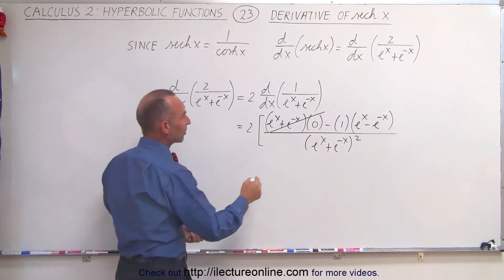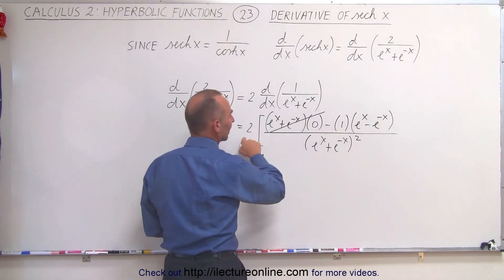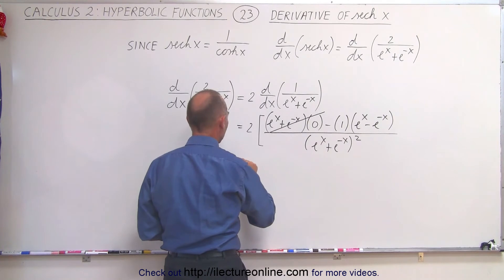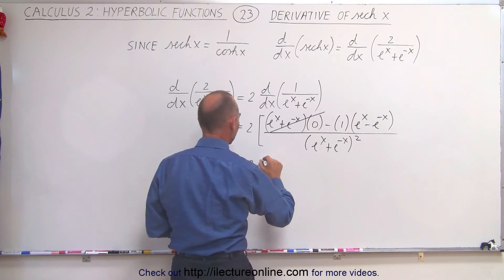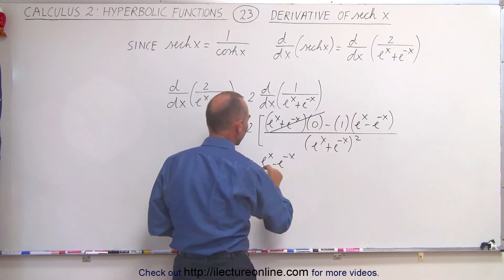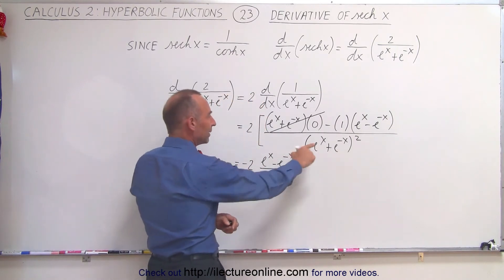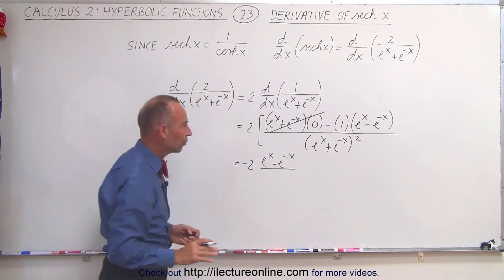And then we can factor out a negative 1 that becomes a negative 2. So let's go ahead and do that. This becomes equal to negative 2 times e to the x minus e to the minus x. When I divide that by this squared, I'm going to write it as follows.